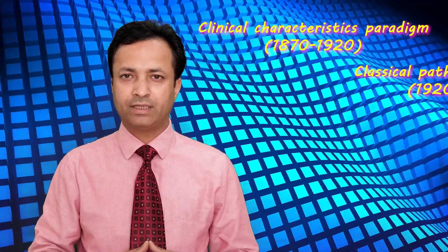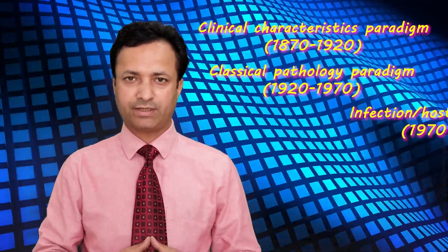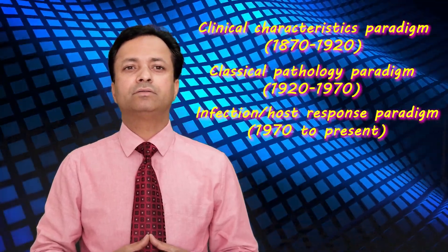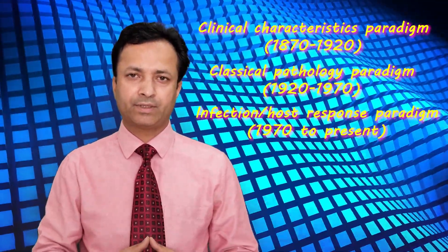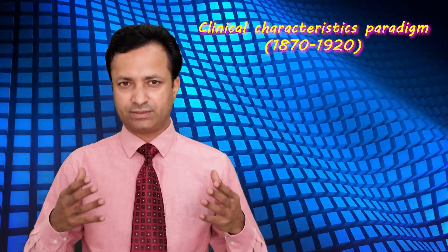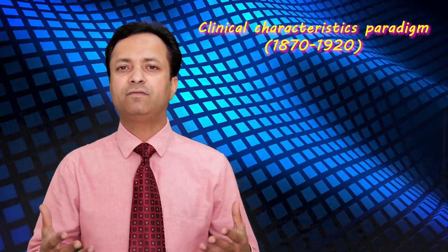First is the clinical characteristics paradigm, the second one is the classical pathology paradigm, and the third one is the infectious etiology paradigm. Now the first paradigm, that is the clinical characteristics paradigm, the classification systems given during this period they were totally dependent on the clinical features of the disease.